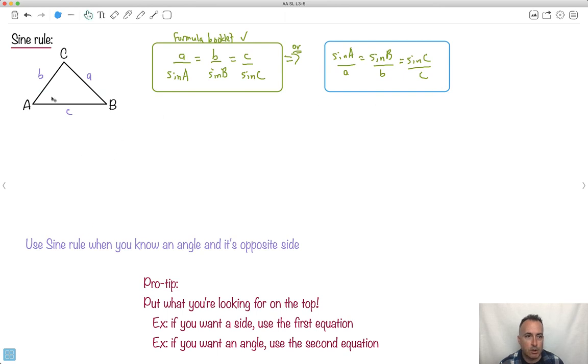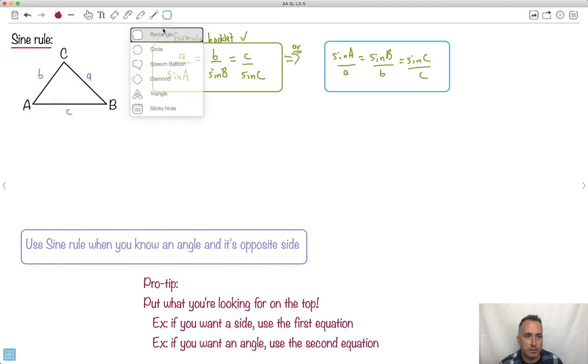So basically to try to show you what to do, you need to know an angle and its opposite side. So if you know what A is, let's say you know this value and you know this angle, then you can probably do this. Probably, but not always. So that's why I was saying, use the sine rule when you know an angle and its opposite side. That's a nice thing to know about. But also, this pro tip right here. I think that'll be an important one to talk about.